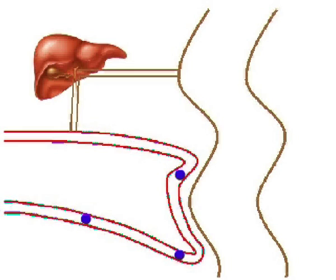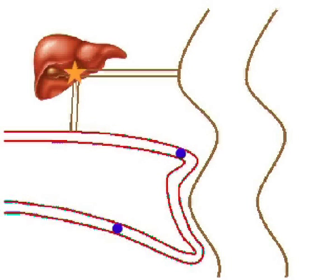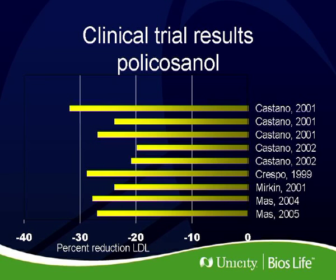What happens with polycosanol? Polycosanol passes through the liver, and when it reaches the liver it effectively inhibits and slows down the production of cholesterol. So cholesterol is still being produced, but at a much slower rate. Cholesterol is thus lowered in a third way, and many studies have shown that polycosanol can lower cholesterol. With BiosLife, it's only one mechanism.